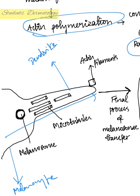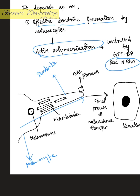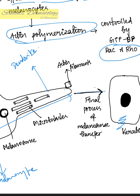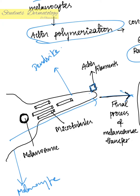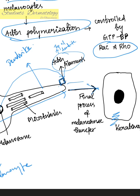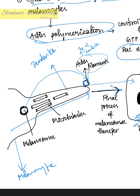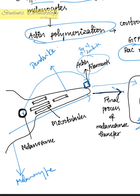This is the melanocyte and this is the keratinocyte, and the final process is the transfer of the melanosome from the melanocyte to the keratinocyte. An actin filament is present at the tip of the dendrite. Before this final process, the melanosome must travel from the cell body to reach the actin filament at the dendrite tip — only then will it be transferred to the keratinocyte.